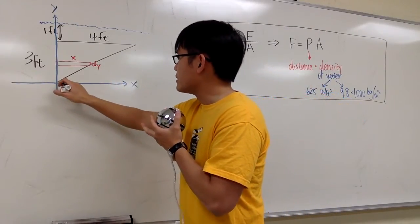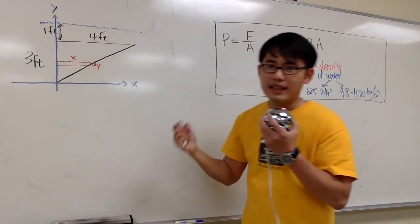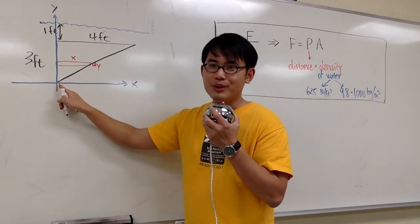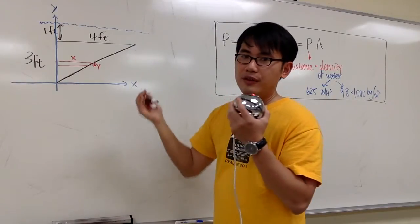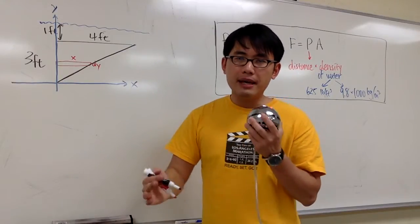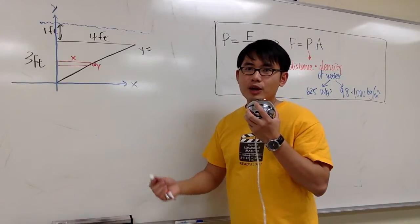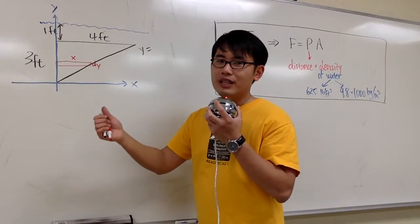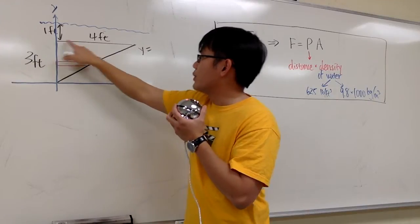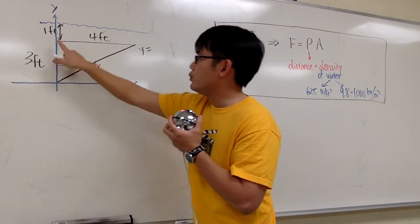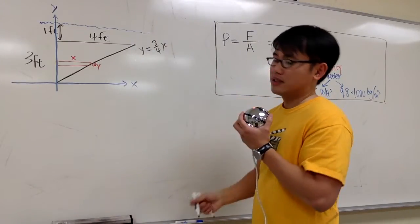Now I just have to consider this line and figure out an equation for it. I know the y-intercept will be 0, because I placed the origin there. The equation of this line just requires figuring out the slope: y equals mx plus 0. Slope is the change in y divided by the change in x — we go up 3 feet and to the right 4 feet, so the slope is 3 over 4. Therefore y equals (3/4)x.